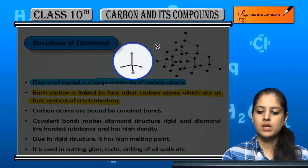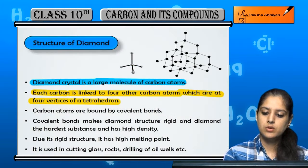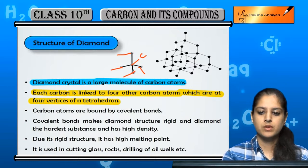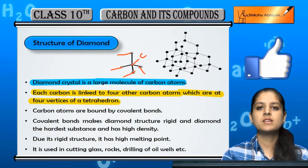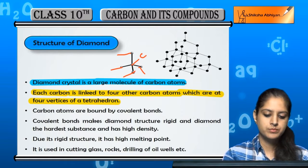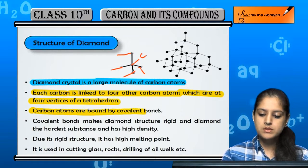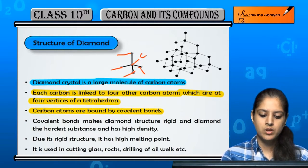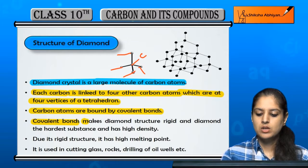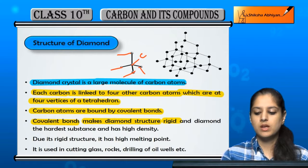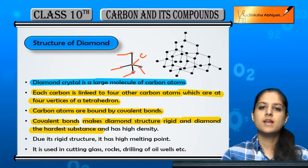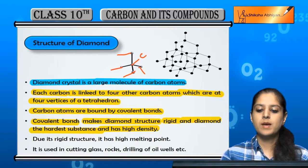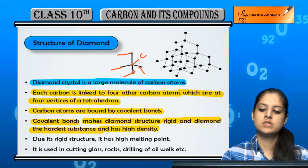At the four vertices of a tetrahedron you can see carbon atoms attached. Because carbon is tetravalent, carbon atoms are attached to four other carbon atoms by covalent bonds. Because of these covalent bonds, the diamond structure is rigid, making it ultimately the hardest known substance with a very high density. The reason for diamond's hardness is these strong covalent bonds.